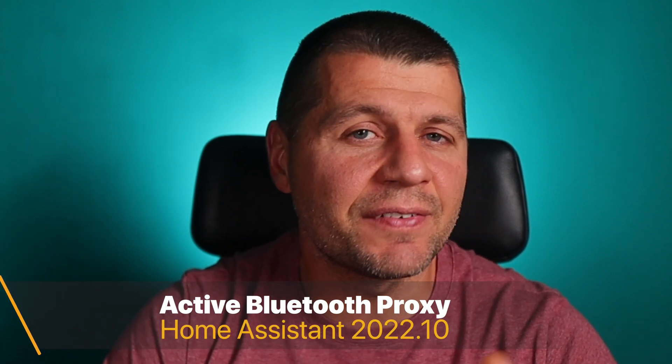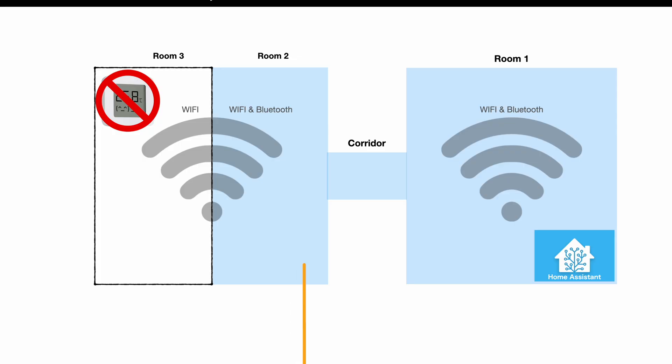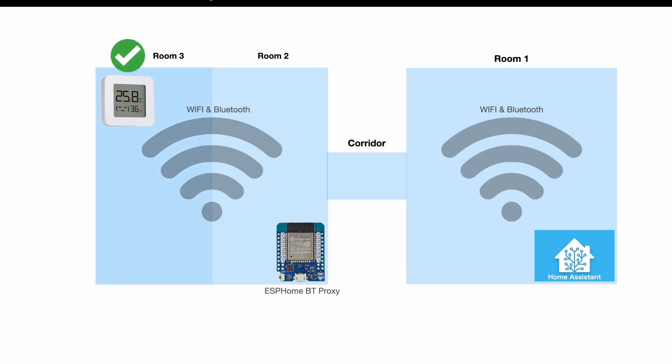The next big thing coming with Home Assistant 2022.10 is active connections for Bluetooth remote proxies. It is already possible to use an ESP32 device as a Bluetooth proxy. Until now the drawback was that only reading data from connected Bluetooth devices was possible — it was not possible to command them. Now this is fixed, and both reading and executing actions against Bluetooth devices is possible, of course if the Bluetooth devices support that. This completes the circle and allows using the ESP32 Bluetooth proxy method instead of buying Bluetooth dongles.